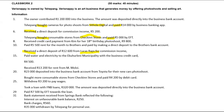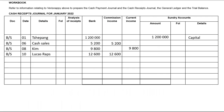We received 13,200 for rent from M. Mloy. That one didn't specify whether it was a direct deposit or not; as a result, we have to record it in the analysis of receipts. In the CRJ you will have BS — we received it from M. Mloy — it goes under analysis of receipts 13,200, bank 15,200. This is for rent income; we don't have a column for rent income, so we record it under sundry.